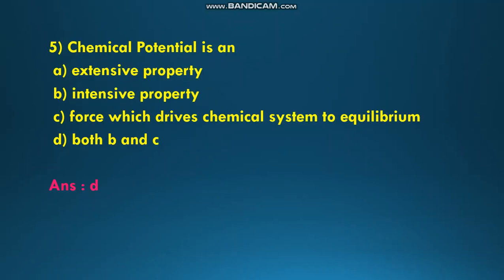Next question is: chemical potential is what? The options are extensive property, intensive property, force which drives chemical system to equilibrium, and the last option is both B and C. Chemical potential mu is both B and C, that is intensive property as well as the force which drives the chemical system to equilibrium, so the answer is D.